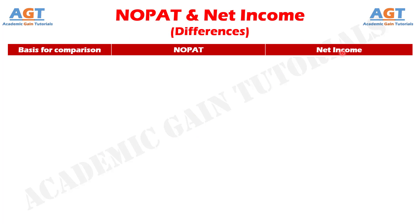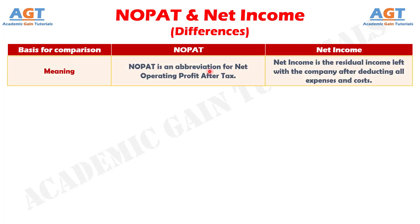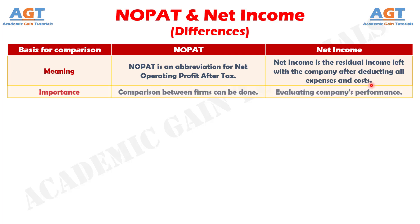Difference number 1: NOPAT is an abbreviation for Net Operating Profit After Tax, whereas Net Income is the residual income left with the company after deducting all expenses and costs.